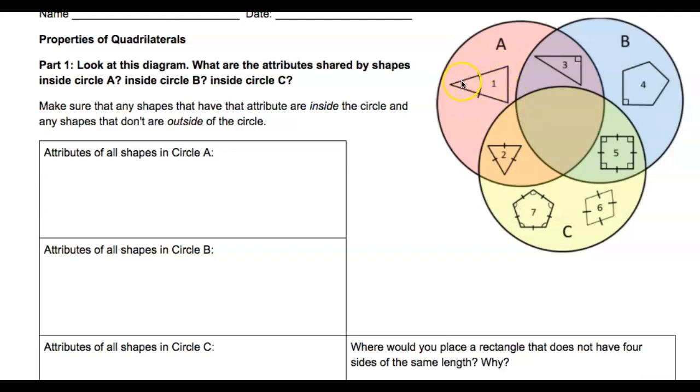Notice how this triangle—this bottom part of the triangle does not have a line. That's because this side is not equal or congruent to these two sides.